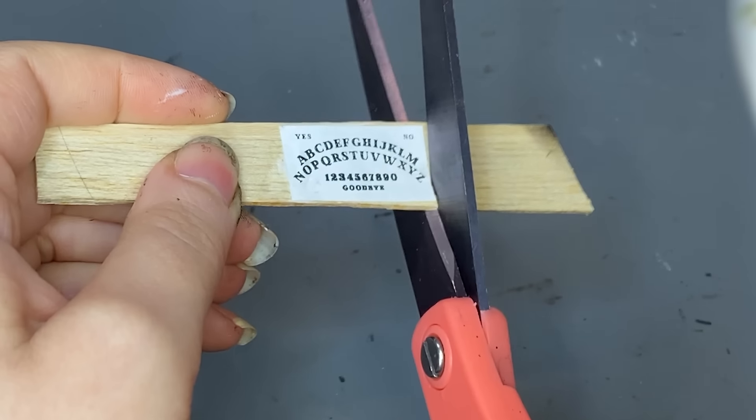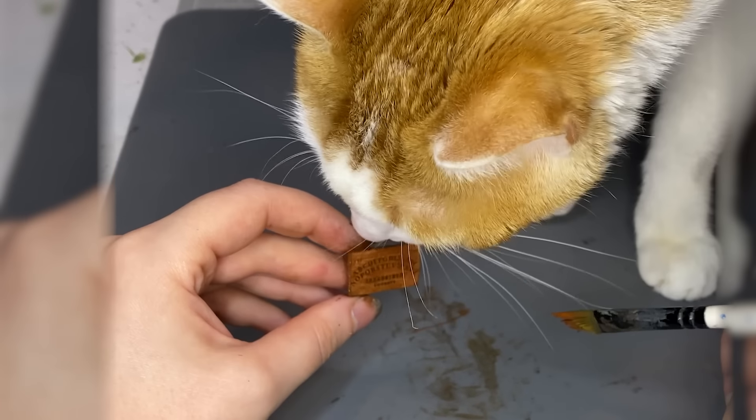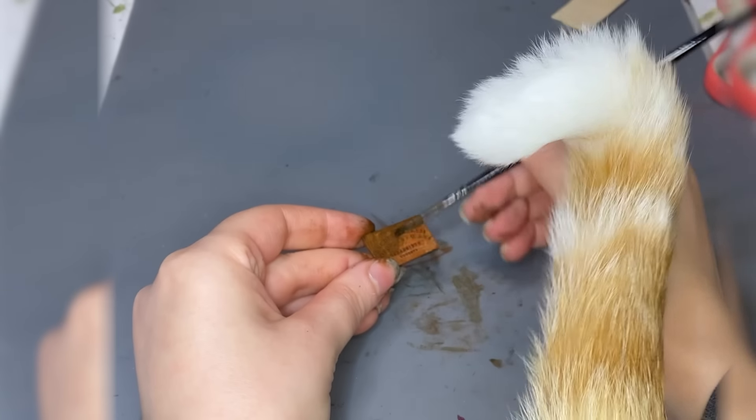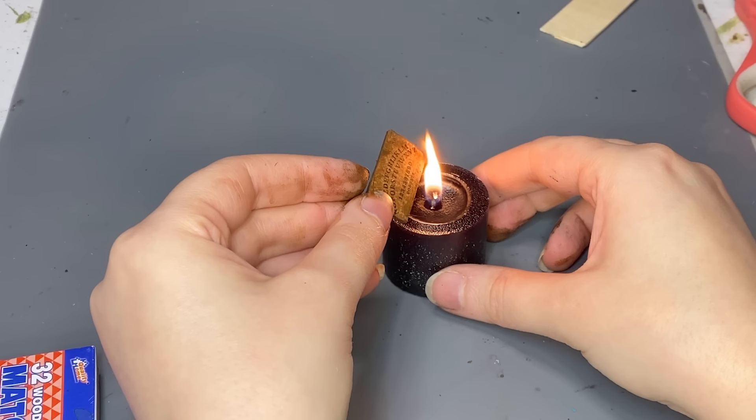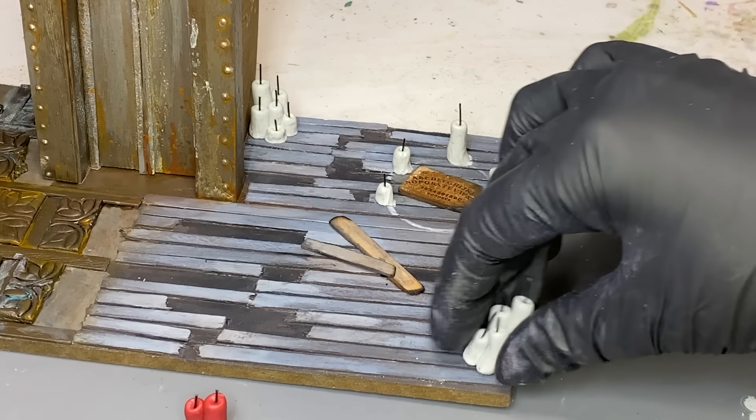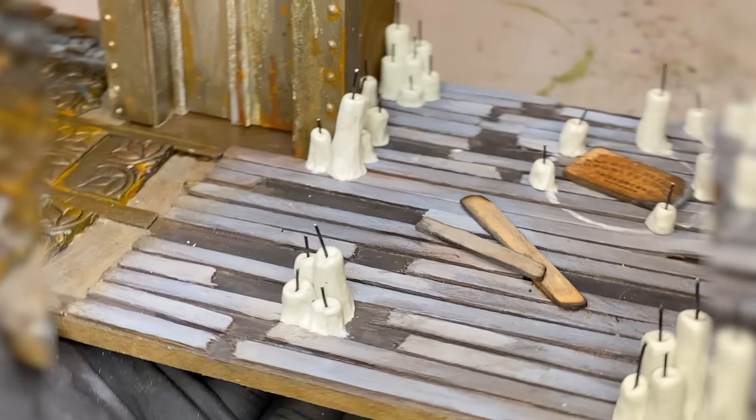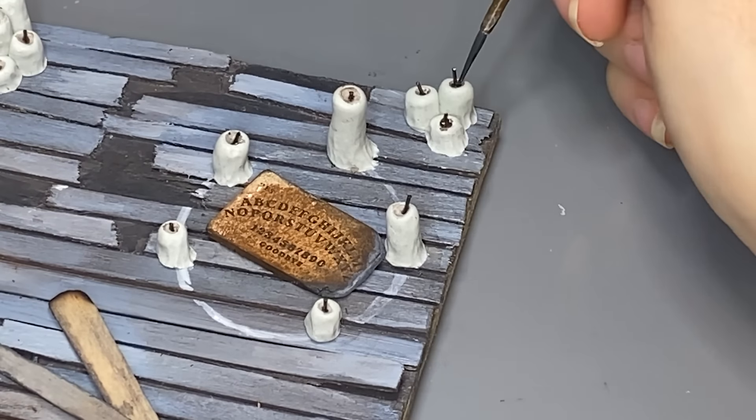Yep, it's a Ouija board. We have a cuteness overlord. Emily's like, I am the cuteness overlord. Look at this, look at the Ouija board, it's hauntingly adorable. And like everything adorable I must destroy it. I'm just kidding. Although why do we have that feeling when something's so cute you just want to squeeze it to death?